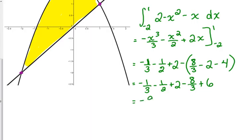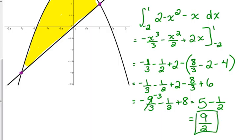Negative 1 third minus 8 thirds is negative 9 thirds. Still got that negative 1 half. Negative 9 thirds is negative 3. So, that's 9 halves. You didn't have to go into getting a common denominator of over 6.